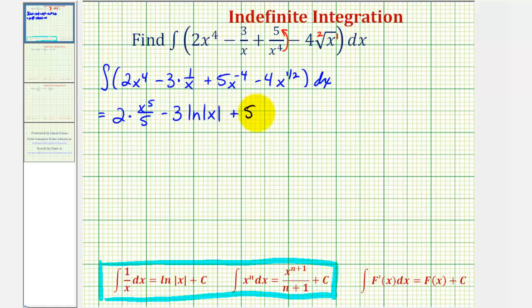Plus 5 times the antiderivative of x to the negative fourth would be x to the power of negative three divided by 3. Remember, we're adding one to the exponent, so it's x to the negative three divided by negative three.